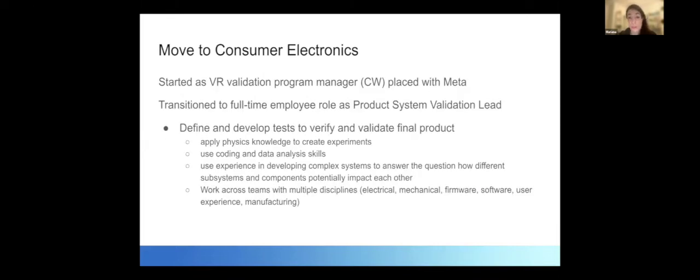That actually leads me to the most recent step, which is moving to consumer electronics. I wanted to move out of the Bay Area and wanted to move to Seattle because I had been missing the rain coming from Europe. So I started at Meta first as a contingent worker.